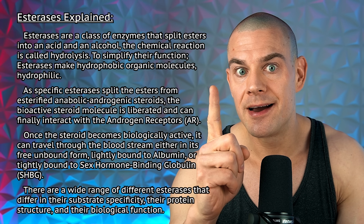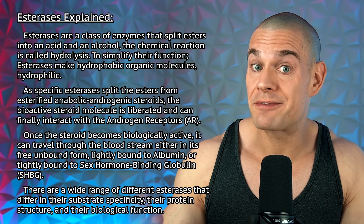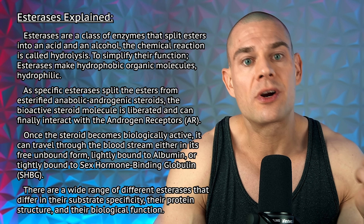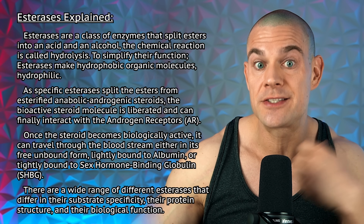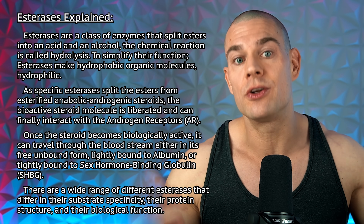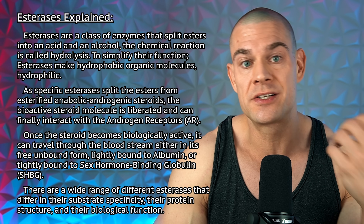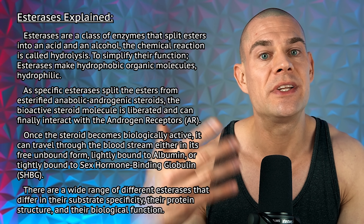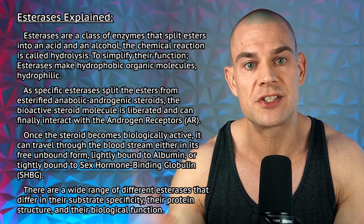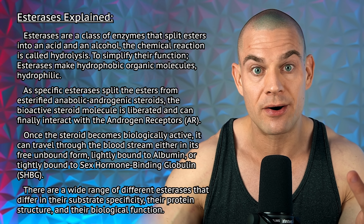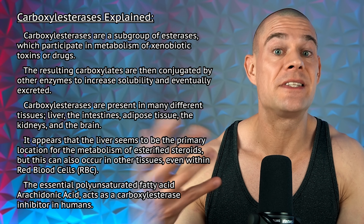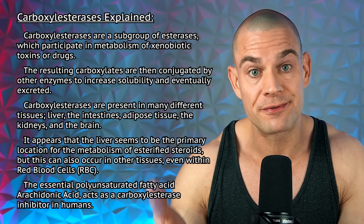Once the esterified steroid is liberated from the injection depot, it enters systemic circulation, and then the ester attached to the steroid is metabolized by esterases, one carbon atom at a time. Different esters have different amounts of carbon atoms, and generally speaking, the more carbon atoms an ester contains, the longer it takes for esterases to fully metabolize the ester away, which ultimately liberates the steroid molecule. It's the free steroid molecule that can actually bind to the androgen receptor — esterified steroids cannot. More specifically, carboxylesterases metabolize the carbon atoms away from the esterified steroids.